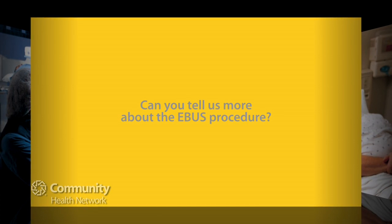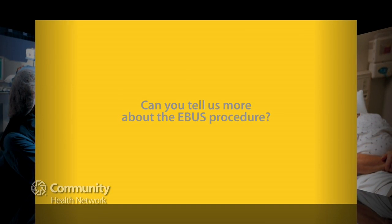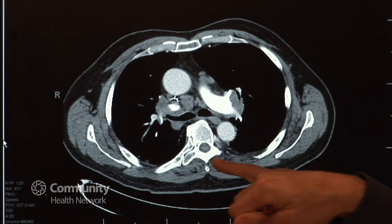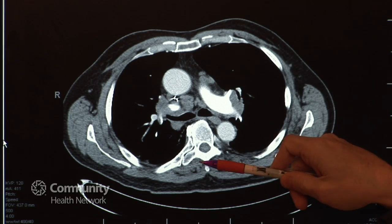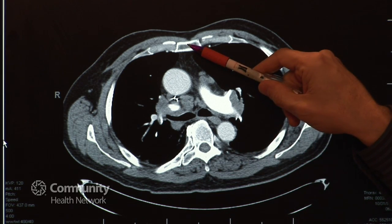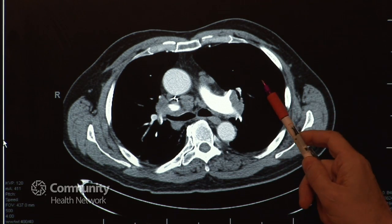Just to orient you, this is a copy of a CAT scan. This is an image obtained in the middle of the chest. This would be the patient's back, this would be the patient's front, this would be the right side, and this would be the left side.